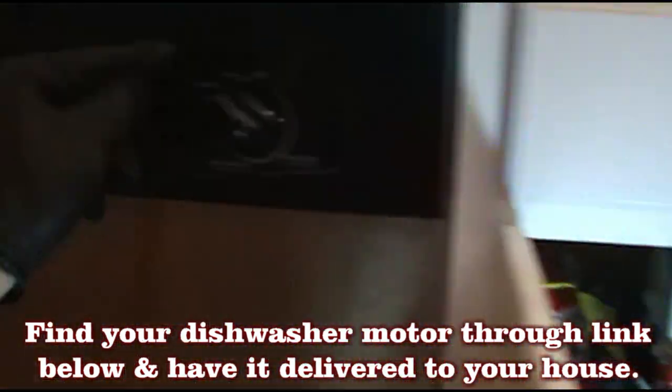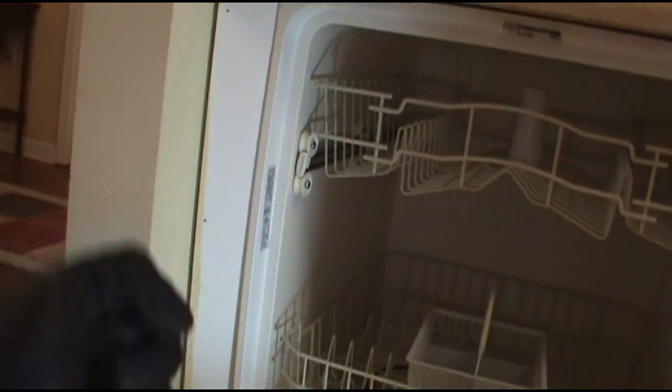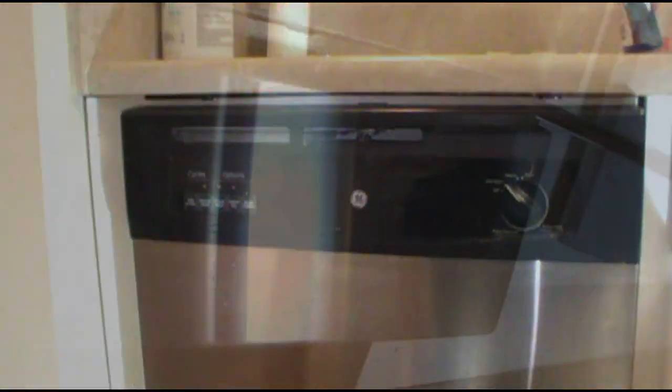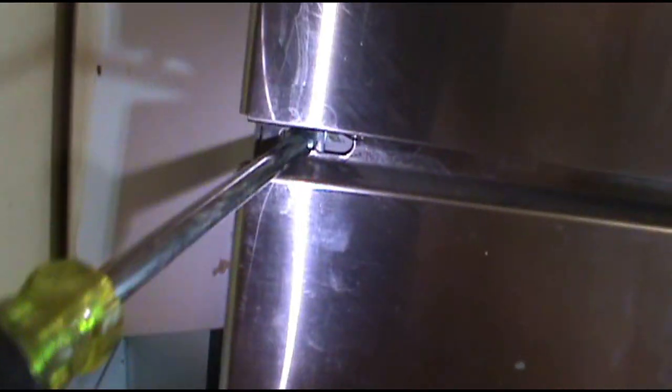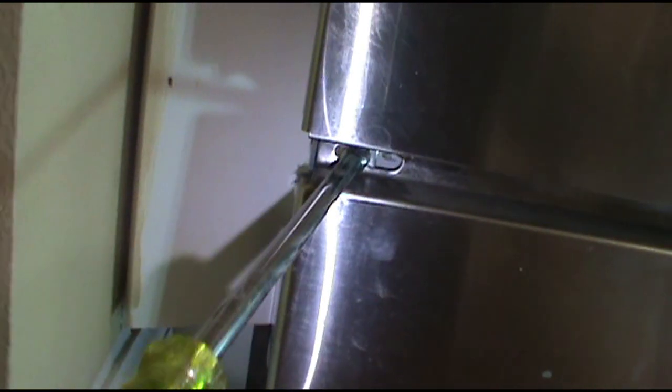Then we're gonna pull these two screws out and once you get those screws out the whole dishwasher will come out. We'll flip it upside down and replace the motor, super simple. Take the front panel off and make sure there's not a piece of paper or something just hitting on the motor, because I don't really know what's going on here. I was gifted this work order, coming in behind somebody.